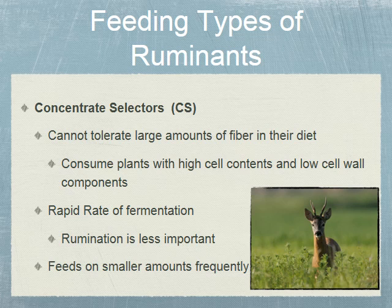Some non-ruminant concentrate selectors include bears and granivores — birds that consume seeds. Once again, these animals don't do well with diets high in cell wall components.